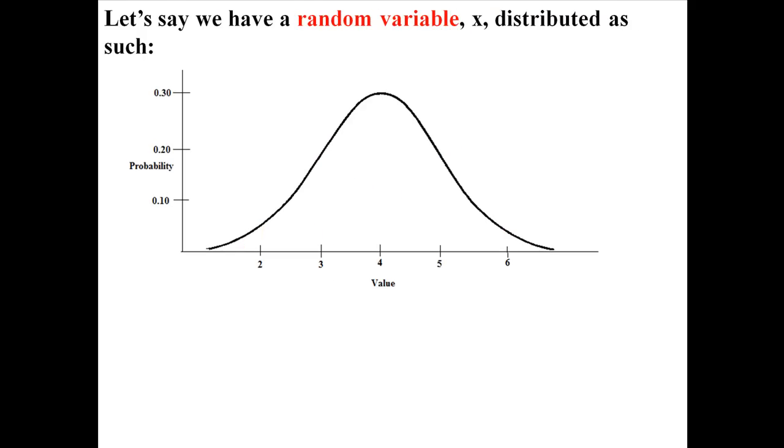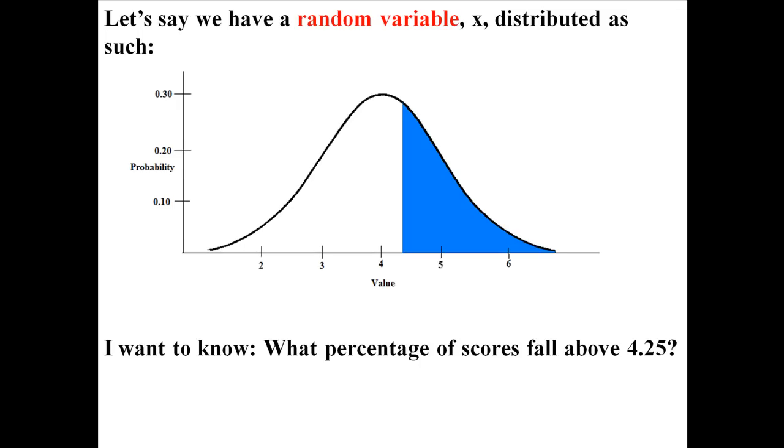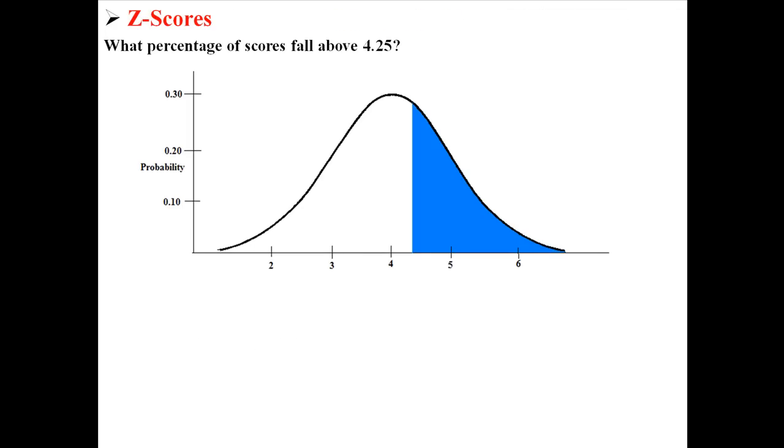So let's say we have a random variable x, which is distributed like this. And I could ask you the question, what percentage of scores fall above 4.25? So really, I'm asking what falls within this shaded area. Now, in order to answer this question, we can calculate a z-score. We're going to convert that 4.25 into a z-score. So we're going to need to know x, we're going to need to know the population mean, and we're going to need to know the population standard deviation.